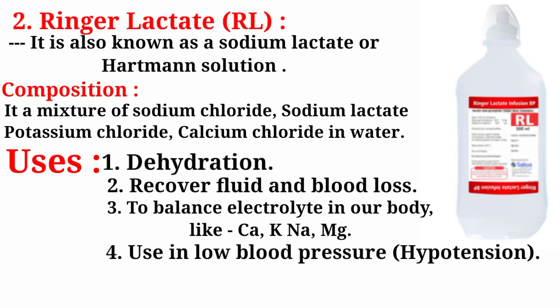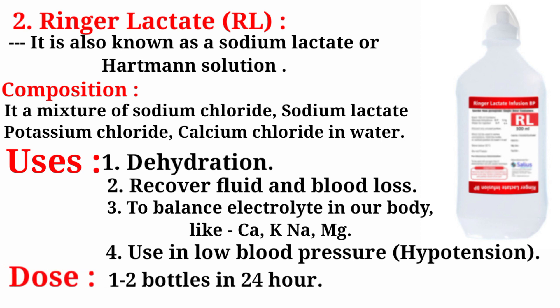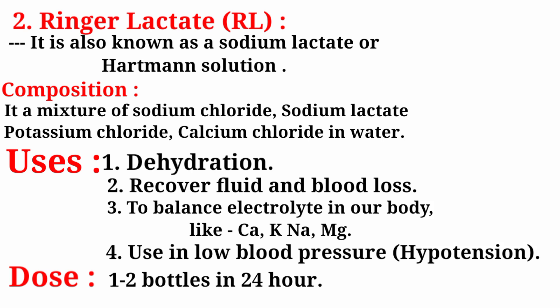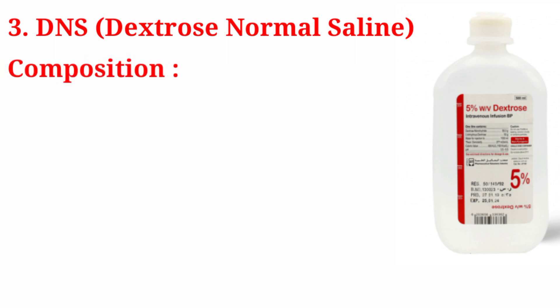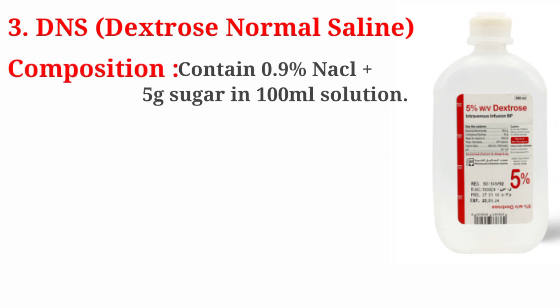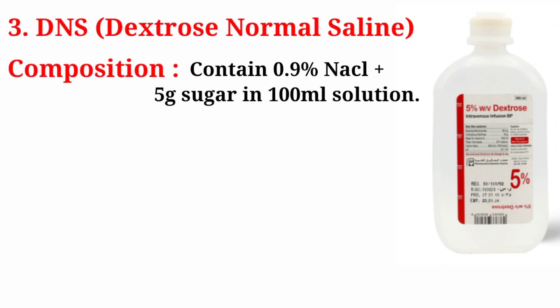Number four, used in low blood pressure (hypotension). Dose: one to two bottles in 24 hours. Number three: DNS — Dextrose Normal Saline, or glucose in normal saline. Composition: 0.9 gram sodium chloride and 5 gram dextrose in 100 ml solution.